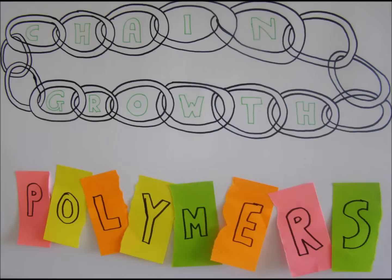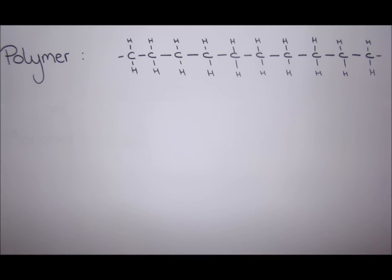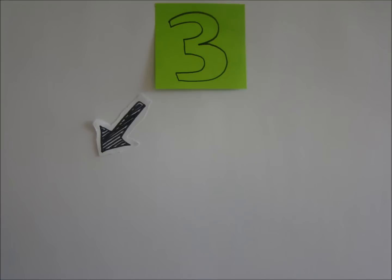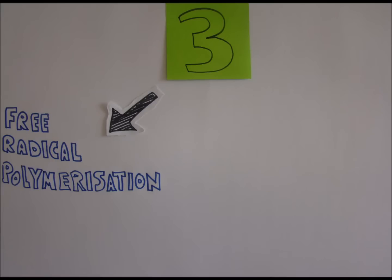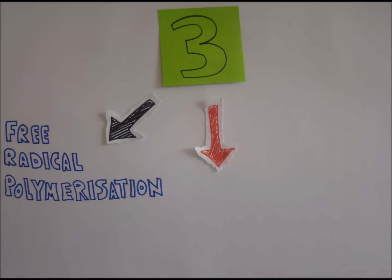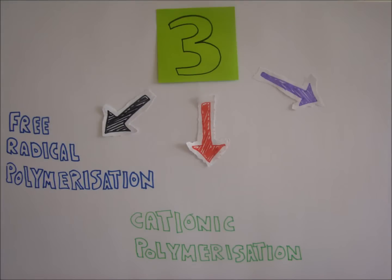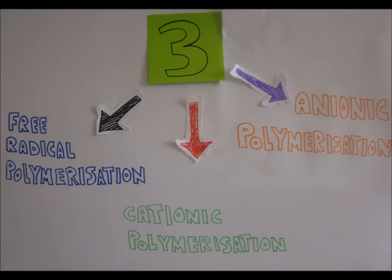Chain growth polymers, like polyethene shown earlier, can be prepared three ways: free radical polymerisation, cationic polymerisation, and anionic polymerisation.